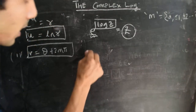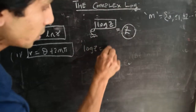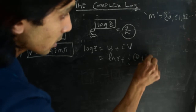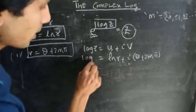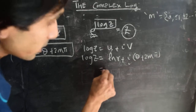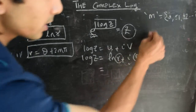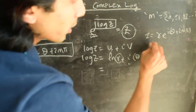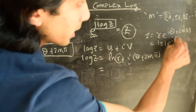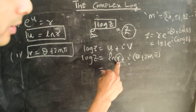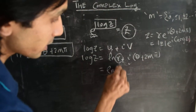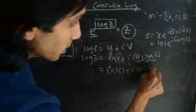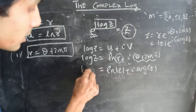Overall, this gives us that log(z), written as u plus iv, equals ln(r) plus i times (θ + 2mπ). That is our complex log. Another way of writing this: since z equals |z|·e to the power of i·arg(z), we have log(z) equals ln|z| plus i·arg(z). This expression brings the argument of z right into the spotlight — the imaginary part of the complex log is precisely the argument of the complex number z.